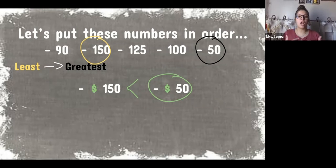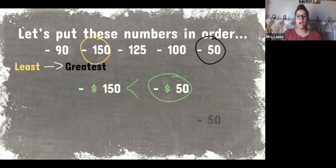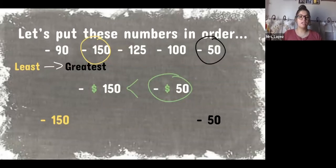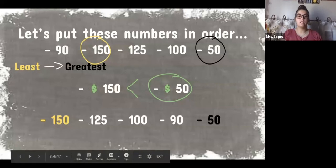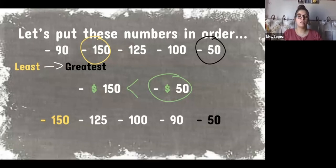Now I'll show you how I ordered the numbers — this time without the number line, to practice without that visual. The greatest number is negative 50 and the least is negative 150. Filling in between: negative 90, negative 100, and negative 125 are all closer to zero than negative 150. So the order from least to greatest is: negative 150, negative 125, negative 100, negative 90, negative 50.